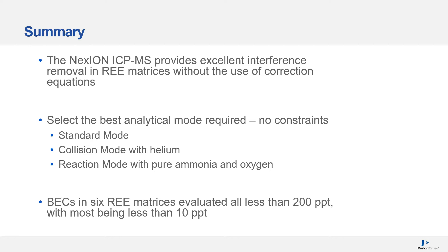In summary, the Nexion ICP-MS provides excellent interference removal in rare earth element matrices without the use of correction equations. However, you need to select the best analytical mode for impurity measurements which is dependent on the rare earth element matrix — there is no one size fits all for these analyses. A mixture of standard mode, collision mode with helium, and reaction mode with either pure ammonia or oxygen was used. The BECs in all six rare earth element matrices evaluated were less than 200 ppt with most being below 10 ppt.